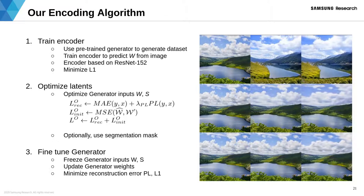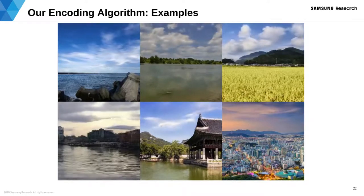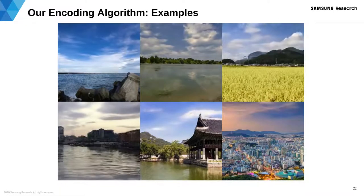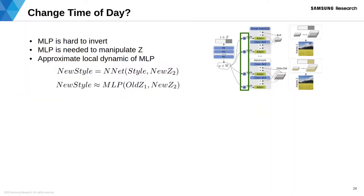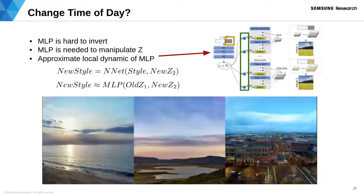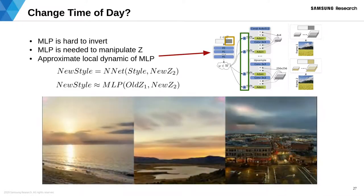Apart from reconstruction, we constrain style vectors to stay close to the encoder predictions, and optimize these variables to minimize a reconstruction error. Finally, we freeze the input variables and fine-tune generator weights to introduce more details into the image. The proposed algorithm can encode and reenact very different images. We can obtain only style vectors; however, the generator handles global changes via its input vector Z, which is transformed to style vectors with a multilayer dense network. We found this network difficult to invert, so we approximate its local dynamic with a separate neural network that predicts style vectors for different lighting conditions.